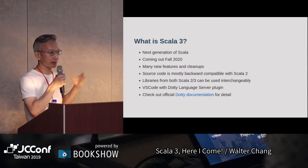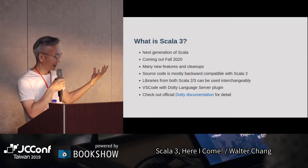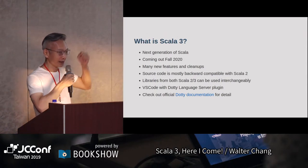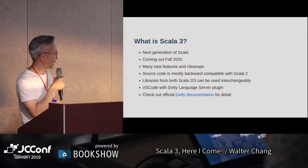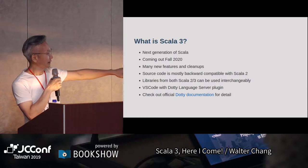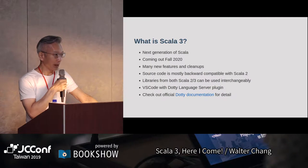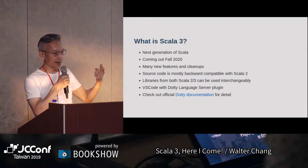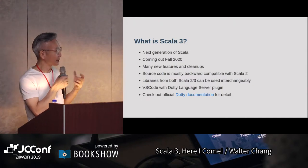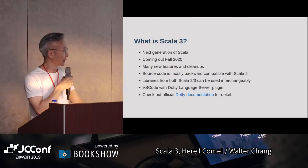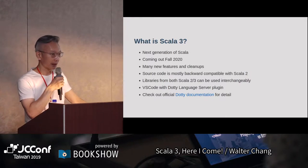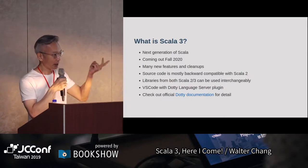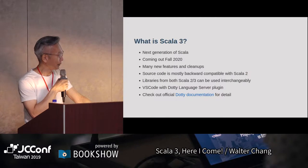因為Scala有type，所以這個transition應該會比較好一點。Library方面，Scala 2跟Scala 3可以互相使用。現在已經可以用Scala 2的library在Scala 3上面，只要在dependency那個地方多寫一些東西。未來兩個版本的library都會是interchangeable。